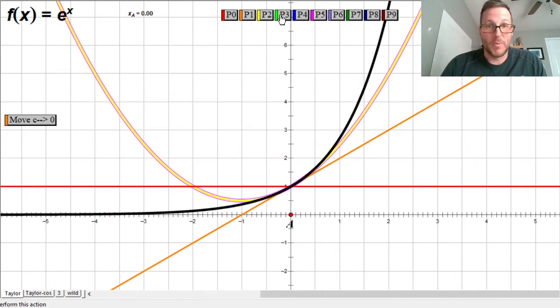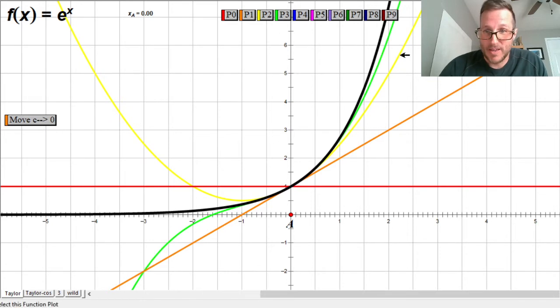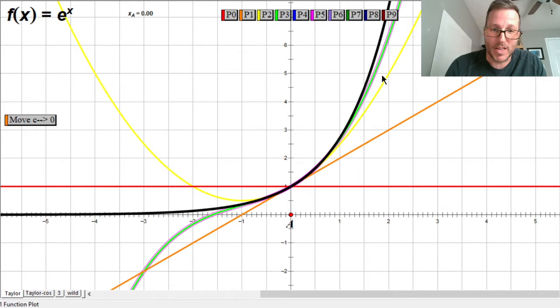Then we get to a tangent cubic. Here's a tangent cubic, and you can see that one hugs closer and closer. How many places do these functions—the line, the quadratic, the cubic—agree exactly with e to the x? That's right, just one spot. Just that point of tangency, which is happening at zero.